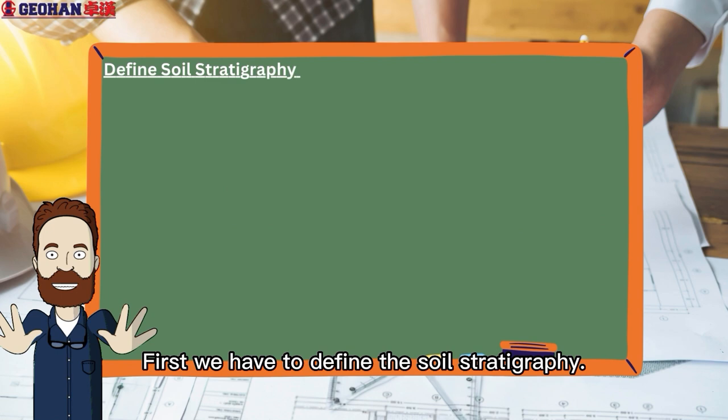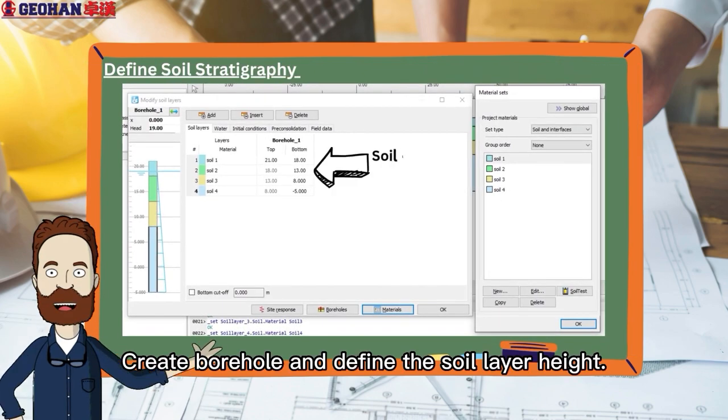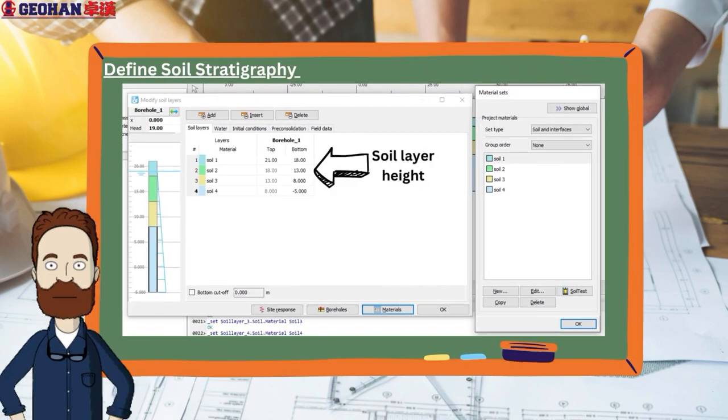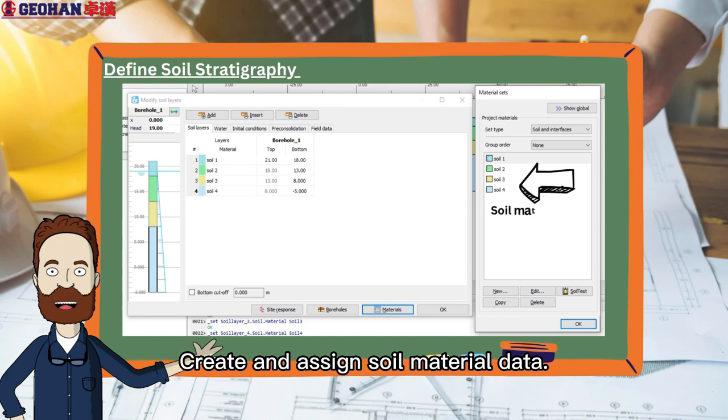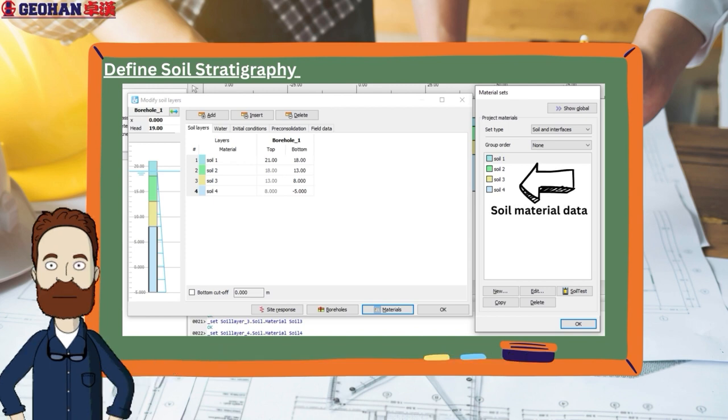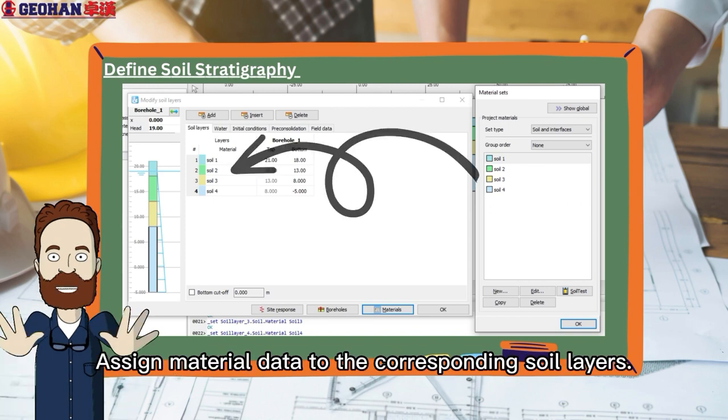First, we have to define the soil stratigraphy. Create borehole and define the soil layer height. Create and assign soil material data. Assign material data to the corresponding soil layers.